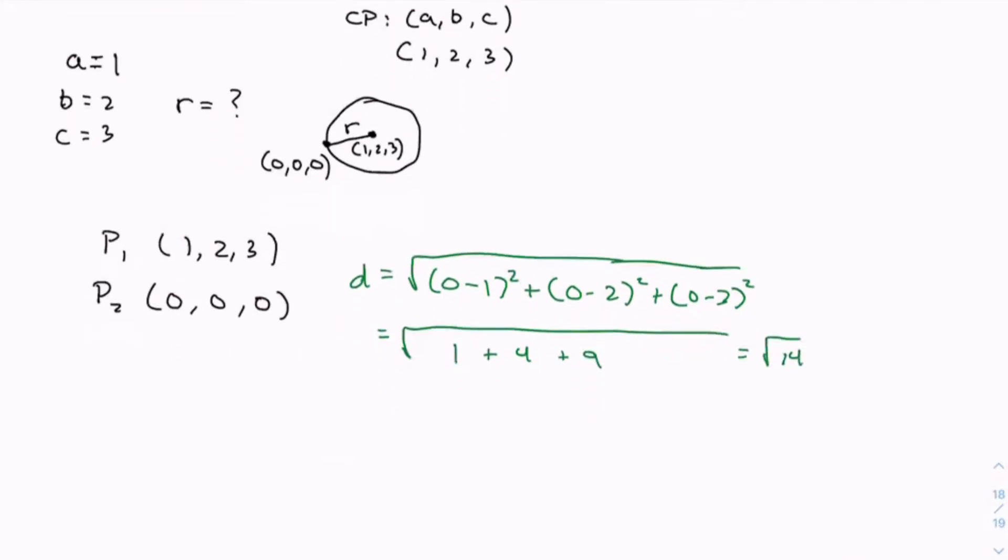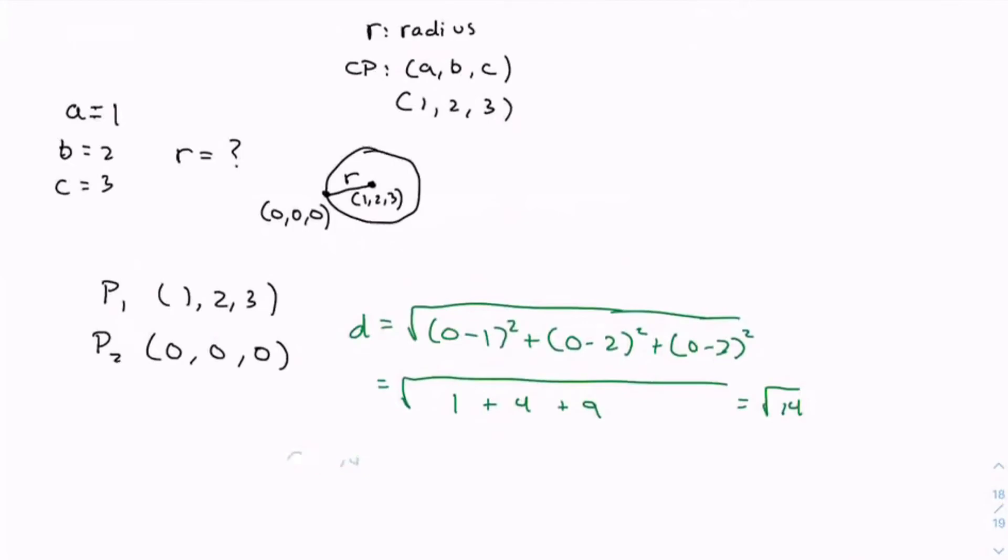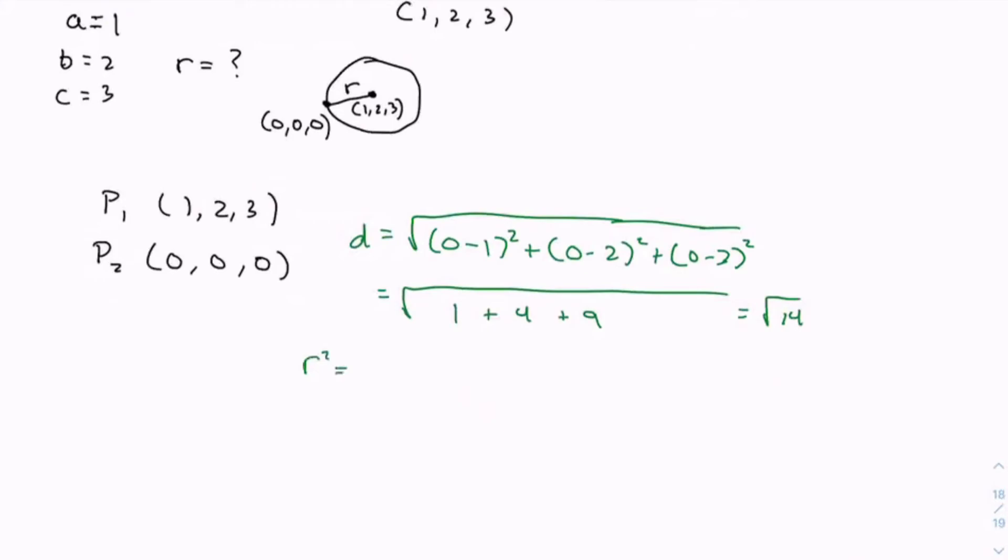So, we know that r is 14. Well, not r. The radius is square root of 14. But for the formula, r² = 14.